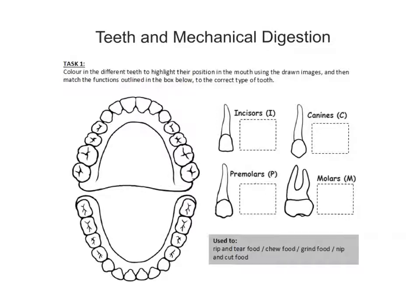Chemical changes occur through chemical digestion and the breakdown using enzymes — that is not the case with mechanical digestion. Mechanical digestion is simply the breakdown of food into smaller pieces using teeth, the actual mechanical actions of breaking that food down.